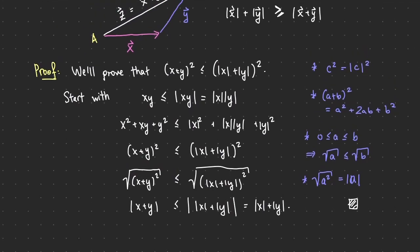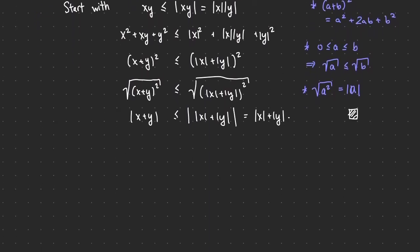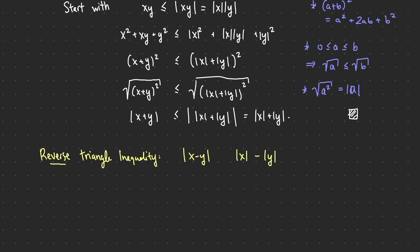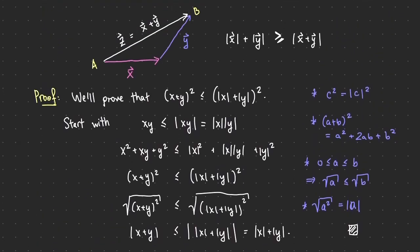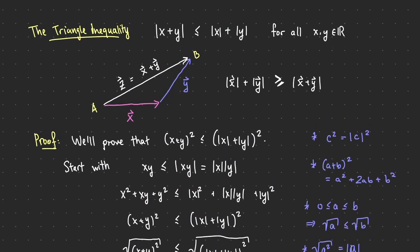Now I'm going to need a second version called the reverse triangle inequality. That's when I take the absolute value of a difference instead of a sum: |x − y| versus |x| − |y|. The one on the left is bigger, which is reverse from the usual triangle inequality where the one on the right was bigger.